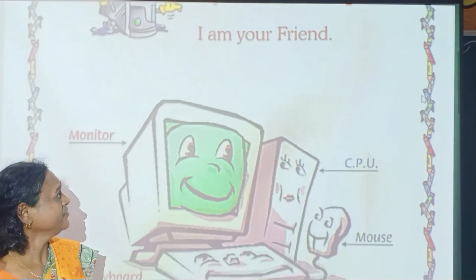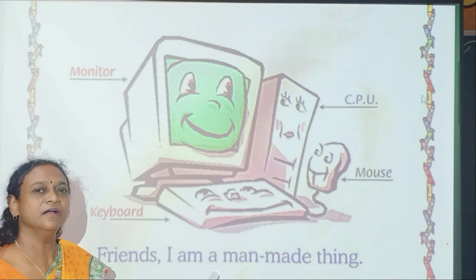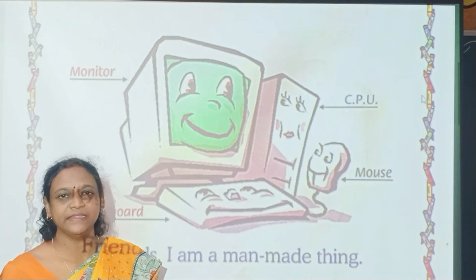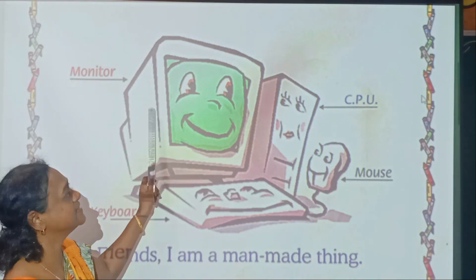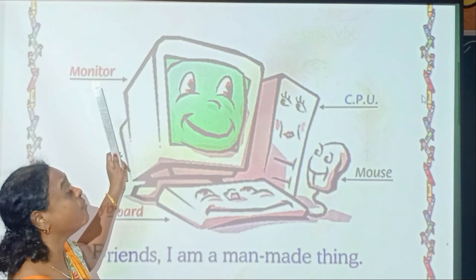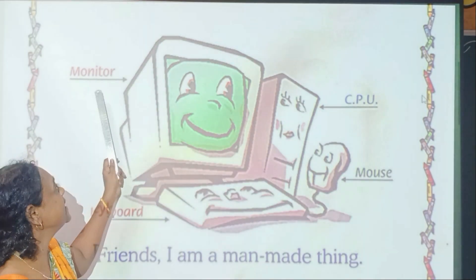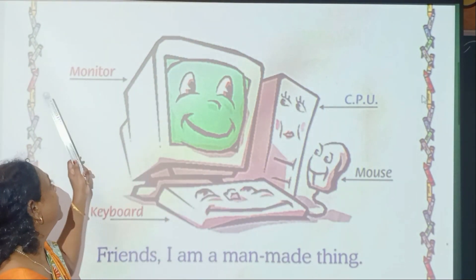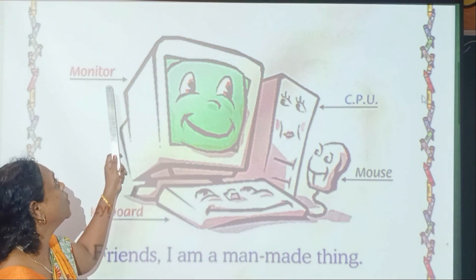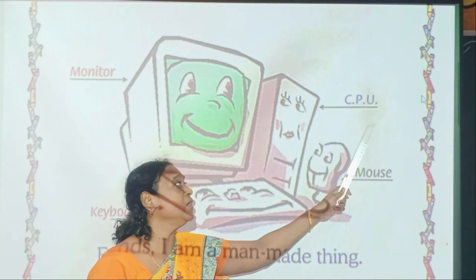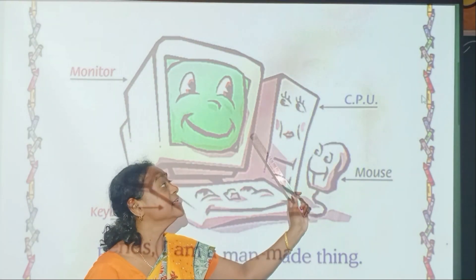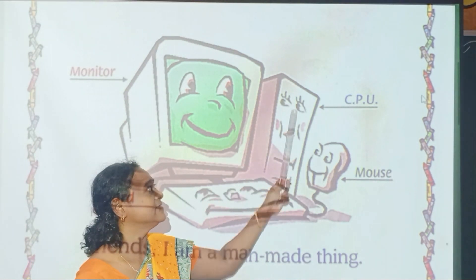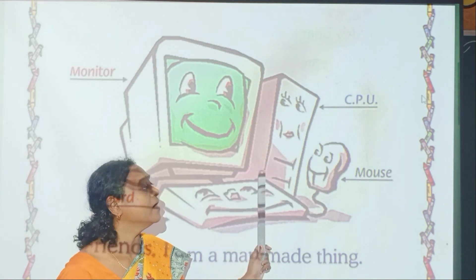Now you can see. This is the picture of a computer. What is this? CPU. CPU is the main part of computer. Brain. This is our brain. CPU is also the main part of a computer.